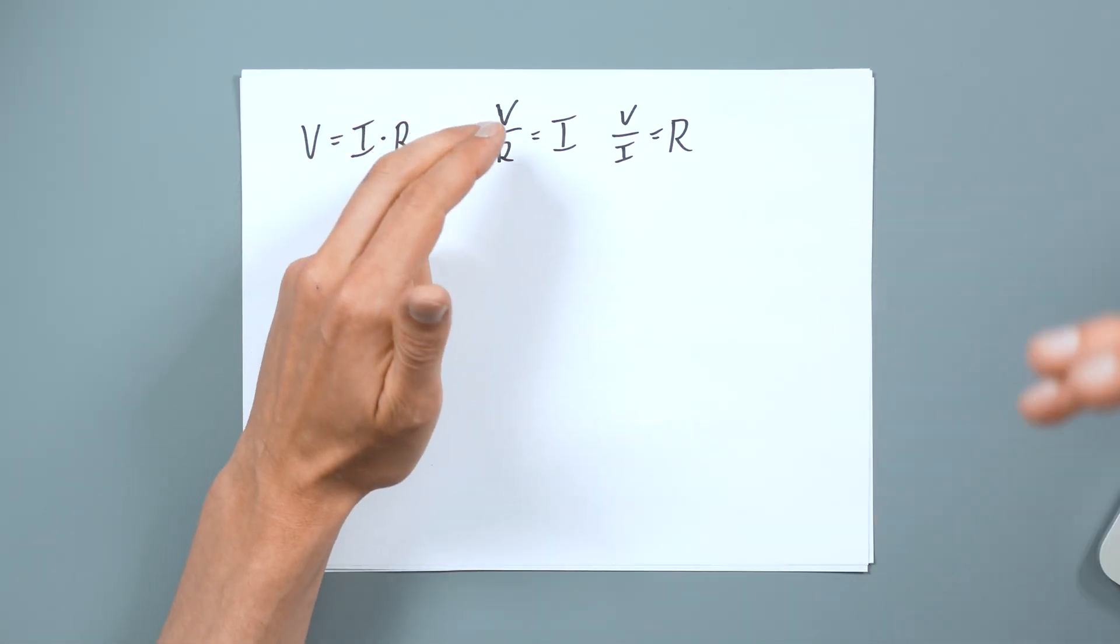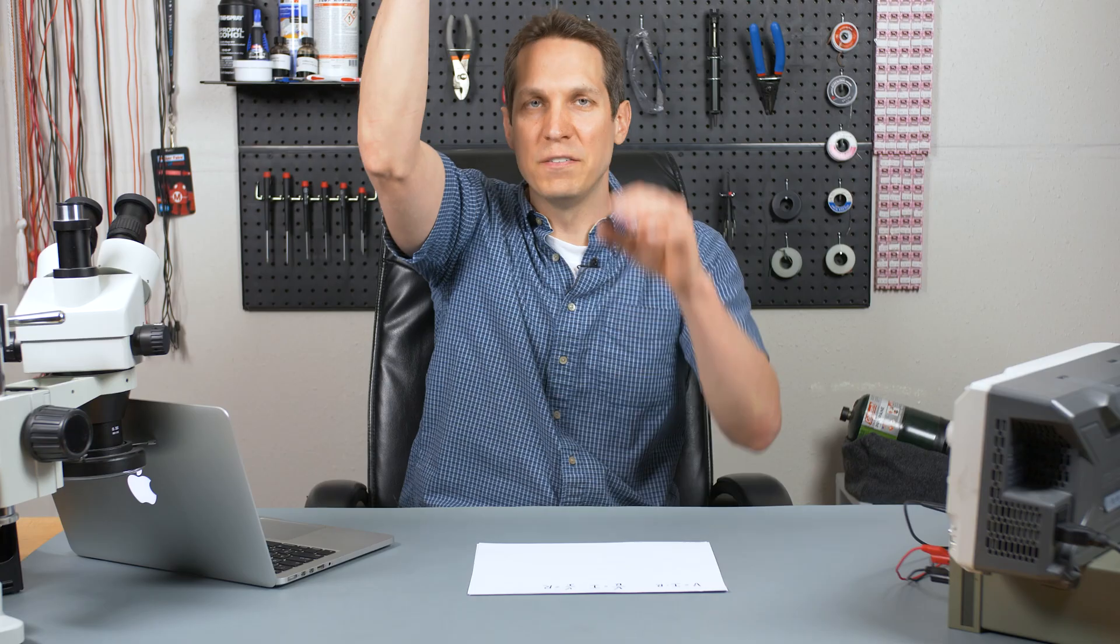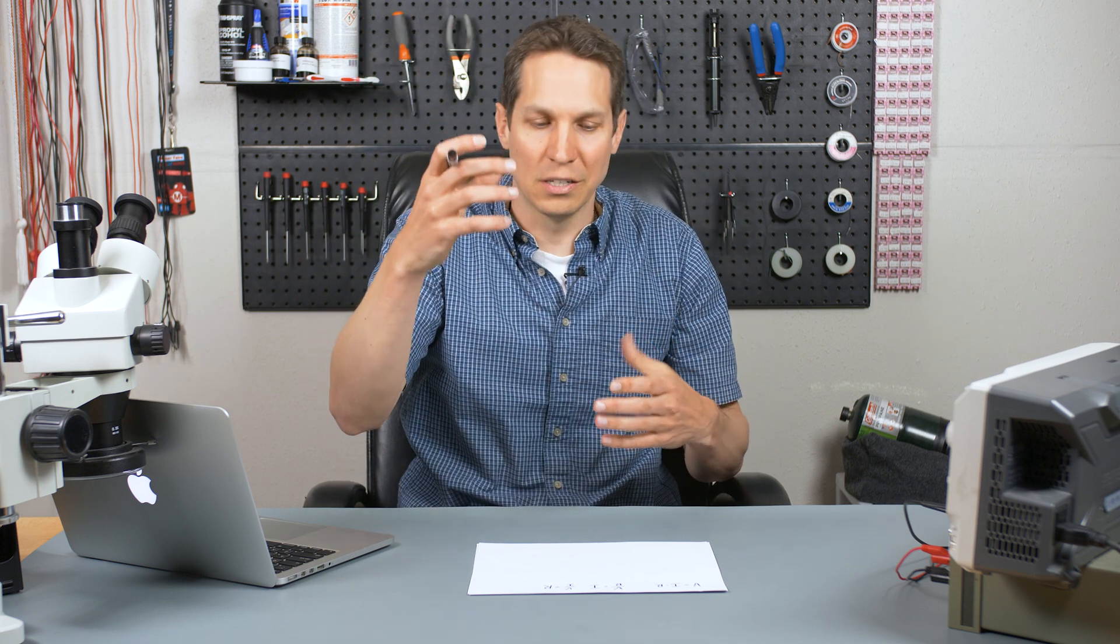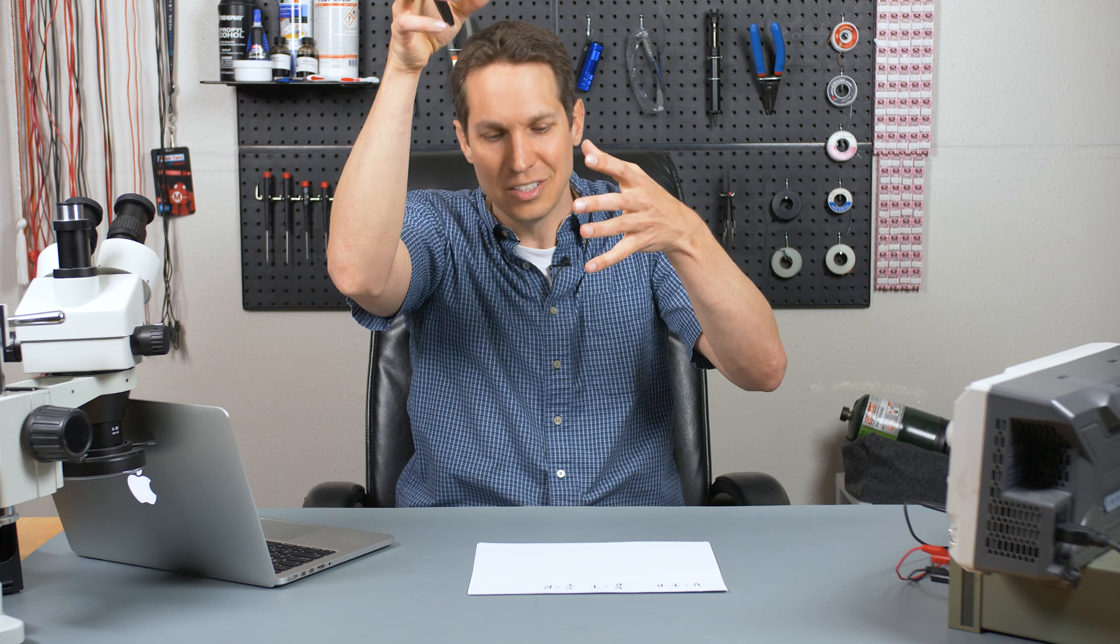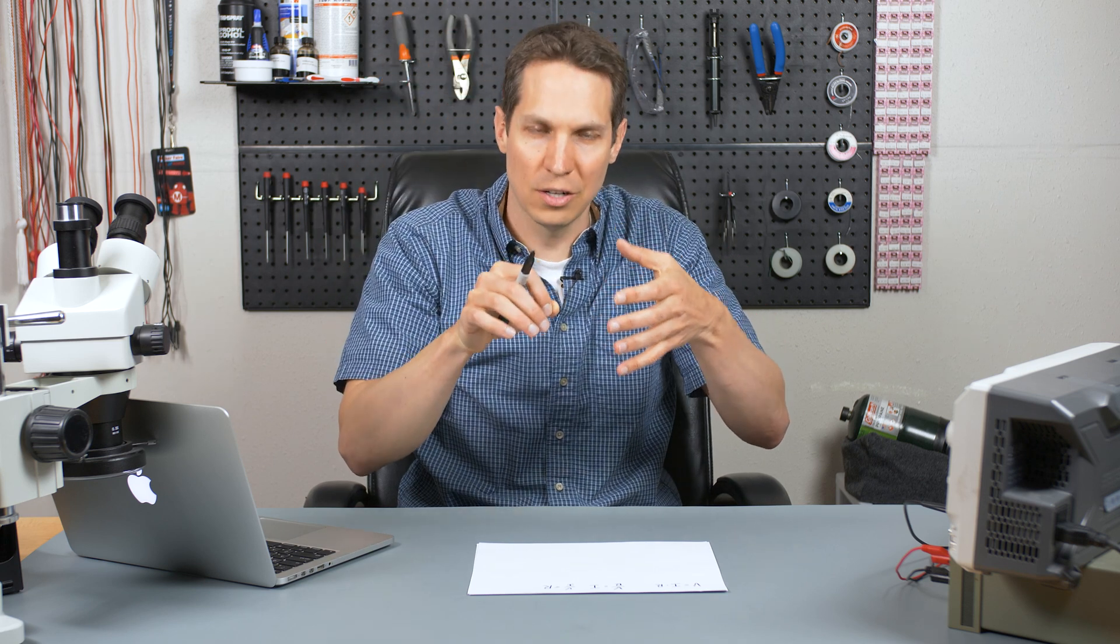And as you can see here, so if you have a voltage, you lift that glass higher, if you have the same amount of resistance, you're going to have more current. But if you have the same voltage, and you increase the resistance, you're going to decrease the current.